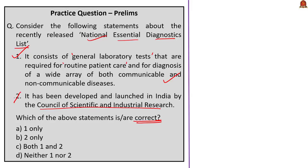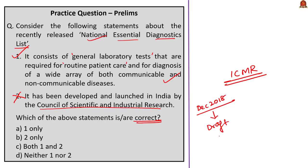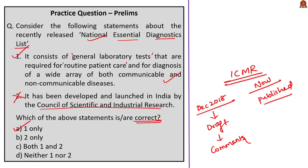The second statement: the National Essential Diagnostics List was developed and launched in India by the Council of Scientific and Industrial Research. This is incorrect — it was developed and released by the Indian Council of Medical Research (ICMR). In December 2018, ICMR released the draft for comments; they later finalized it and uploaded it to their website. Only the first statement is correct, so the answer is option A.